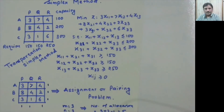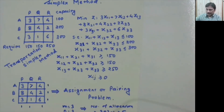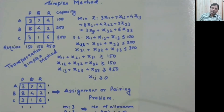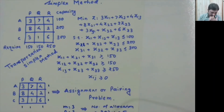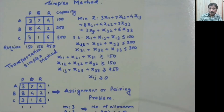For solving assignment problems, we use a very simple algorithm based on work by a Hungarian mathematician — the technique is called the Hungarian technique. Before seeing the Hungarian technique, we will first look at the formulation of the assignment problem.